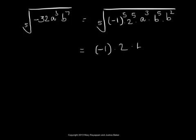Times fifth root of fifth power of b will give just b outside, and times fifth root of a cubed times b squared.